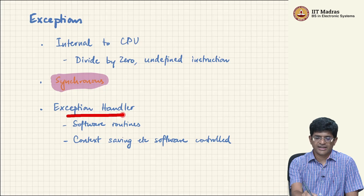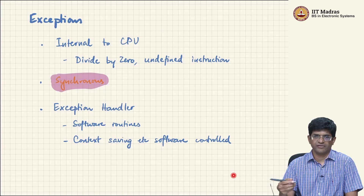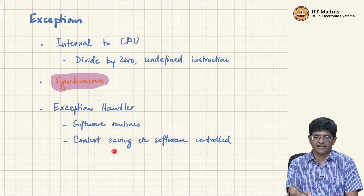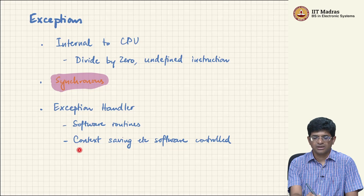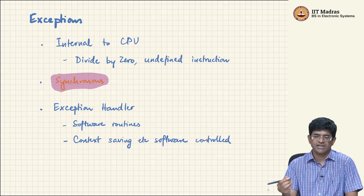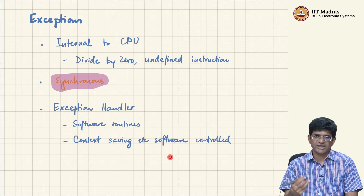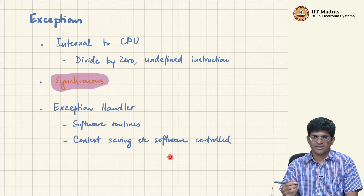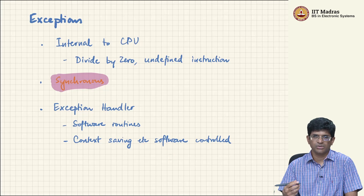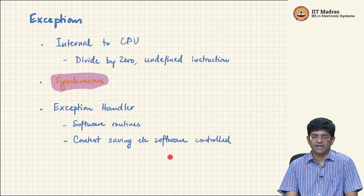Exception handlers, just like interrupt service routines, are also software routines. You could have an exception vector table - given the exception, you find the function to run, save the present context and jump to that function. For a divide by 0, you could print a message, halt the system, or treat it as infinity or not-a-number. All of those can be handled in software without requiring any extra hardware support.